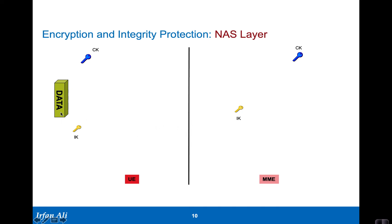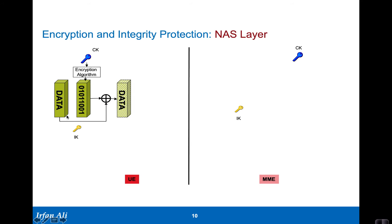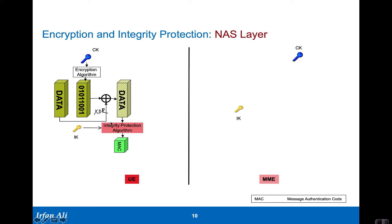This is a NAS message that the mobile needs to send. The first thing the mobile does is encrypt the data by creating what looks like a random number using the ciphering key and encryption algorithm. It typically XORs this with the data to get encrypted data. Once you have encrypted data, an integrity protection algorithm uses the integrity protection key — typically a keyed hash — to get a message authentication code based on the encrypted data. The MAC is then appended to the data, forming the message that is sent.